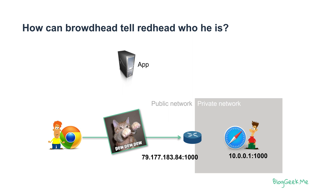He's got a public IP address that was given to him by the NAT device that sits on the edge of his private network going into the public network. The problem is that we only have his private IP address, so we can't really reach him — trying to reach 10.0.0.1 when you're on a public network is impossible. We need to know which NAT to direct our traffic to.